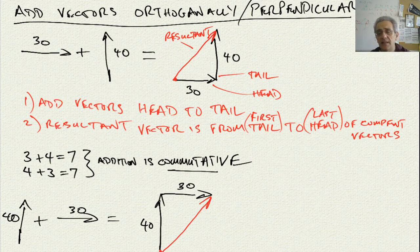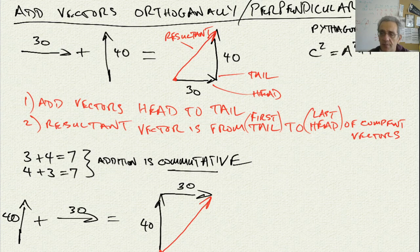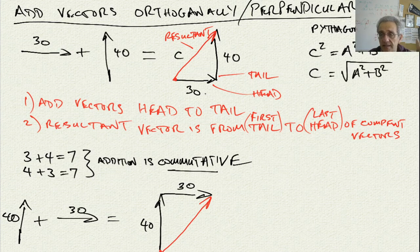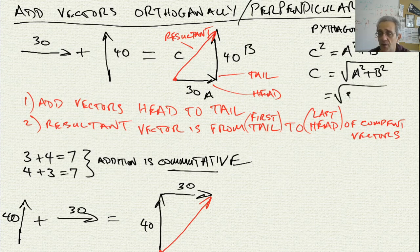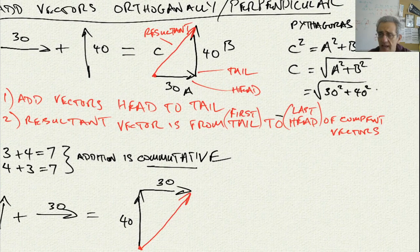How do we calculate this resultant? The way we do this is with a math concept called Pythagoras. Pythagoras says that C squared equals A squared plus B squared. Therefore, the resultant C is equal to the square root of A squared plus B squared. So it's equal to the square root of 30 squared plus 40 squared, which gives us 50 — because of the 3-4-5 triangle.